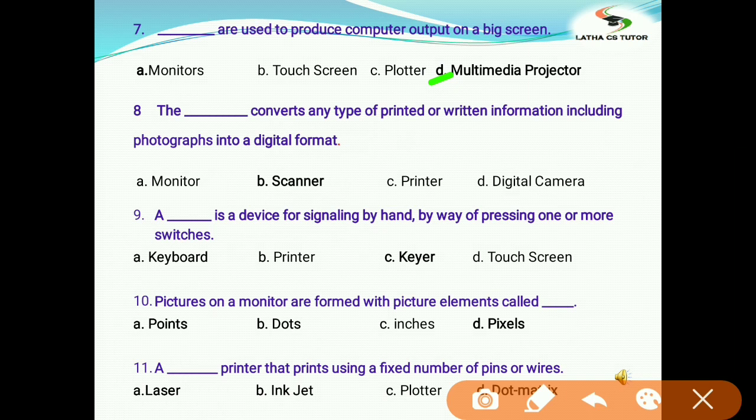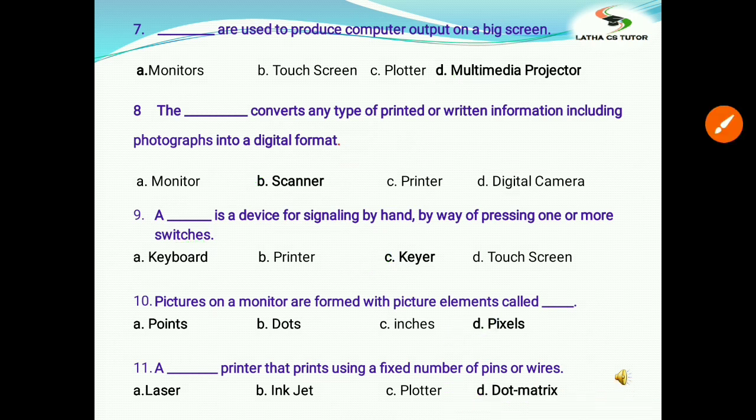Question 8: What converts any type of printed or written information including photographs into digital format? Options: monitor, scanner, printer, digital camera. The correct answer is scanner. A blank is the device for signaling by hand by way of pressing one or more switches. Options: a) keyboard, b) printer, c) keyer, d) touchscreen. As we know, keyboard consists of buttons only for typing letters. But here the question is signaling by hand and by switches, so the correct answer is keyer. Keyer consists of switches and we can signal by hand. Next question: Pictures on monitor are formed with picture elements called points, dots, inches, or pixels? The correct answer is D, pixels.